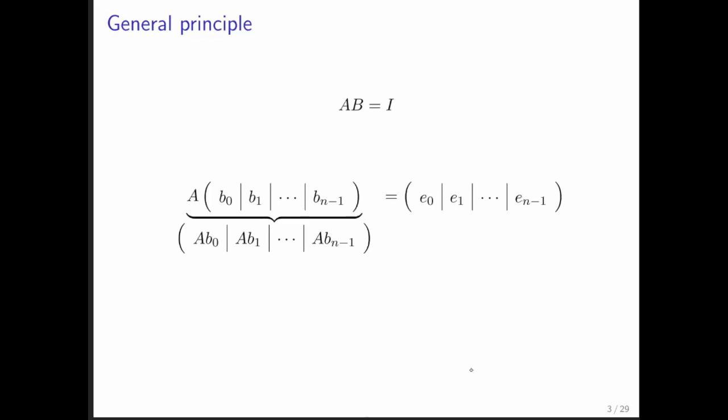But we also know that we then want to end up with the identity matrix, and notice that the columns of the identity matrix are just the unit basis vectors.